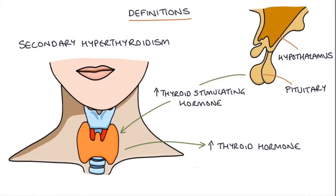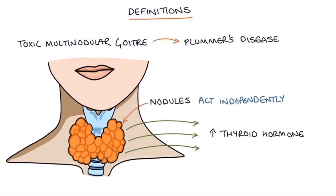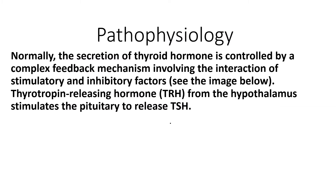Toxic multinodular goiter, also called Plummer's disease, involves nodules that act independently — independent of the negative feedback — and increase thyroid hormone. In terms of pathophysiology, normally the secretion of thyroid hormone is controlled by a complex feedback mechanism involving the interaction of stimulatory and inhibitory factors.